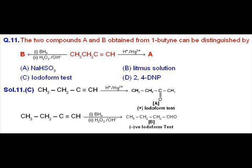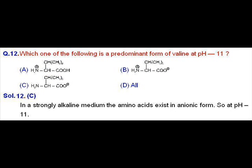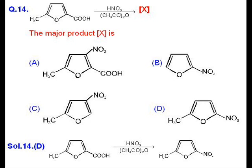So the answer should be C, which can distinguish the products A and B. In question number 12, the predominant form of valine at pH 11, that is in a strongly or moderately basic medium, should be a mono-anionic form, and so the answer should be C.